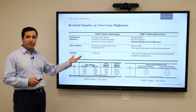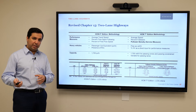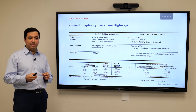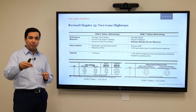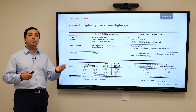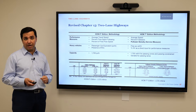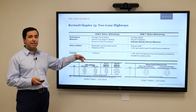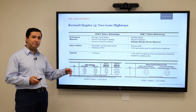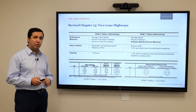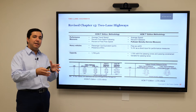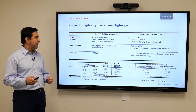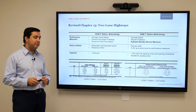Speaking of heavy vehicles, the way this methodology accounts for them is through a direct input into the method. There is a direct parameter we need to enter into the models specifying what fraction of the traffic are heavy vehicles. Previously, we had to determine the fraction of heavy vehicles and then use equivalency factors and PCEs to find the equivalent traffic as if they were all passenger cars. All of that is gone. It is way simpler and more direct when it comes to accounting for heavy vehicles.